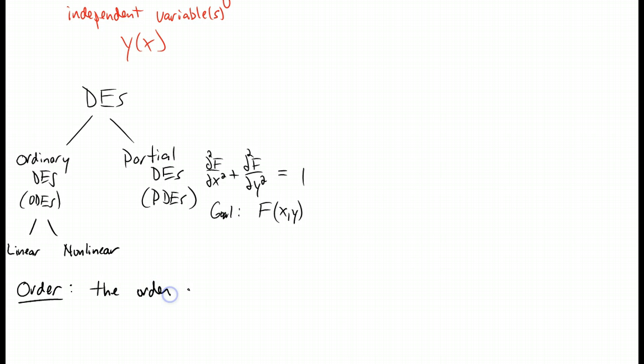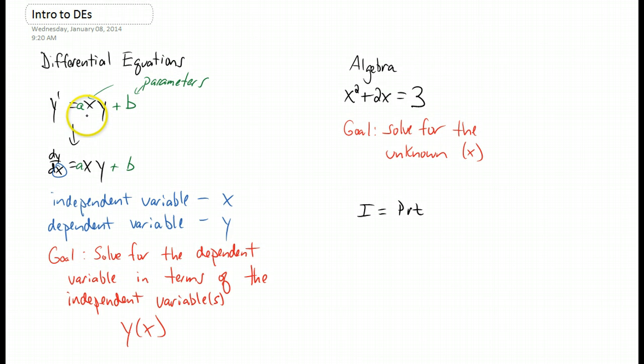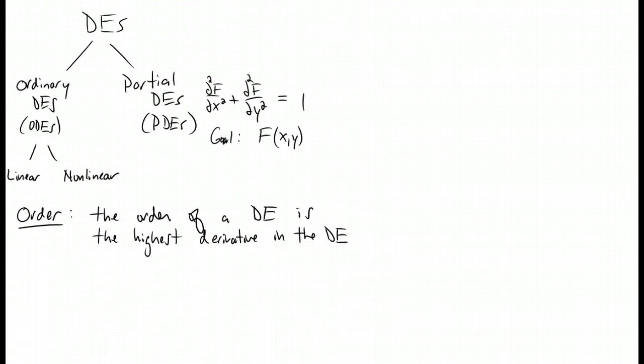The order of a differential equation is the highest derivative in the differential equation. So that might not be the best definition, but if we go back up to the very beginning, we had a differential equation up here. What's the order? Well, we only have one derivative, a first derivative in this problem, so it's a first order differential equation. If we came back down here, I could write down an example of a second order differential equation. Something like that. There are two derivatives in this differential equation. So it is a second order differential equation. It just so happens that this is also a linear differential equation.